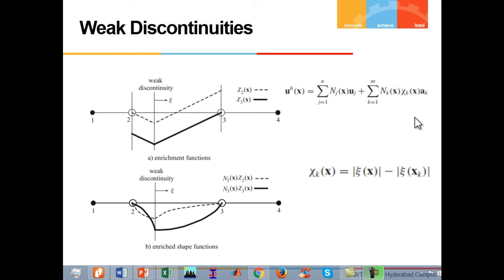Weak discontinuity enrichment. The XFEM approximation can be used for weak discontinuity problems by replacing the Heaviside function with an appropriate enrichment function ξ(x), where ξ(x) is the weak discontinuous enrichment function defined in terms of the signed distance function ζ(x). The same one-dimensional problem discussed earlier is considered, with the only difference being the assumption of a weak discontinuity at an arbitrary location within the middle element. Figure A illustrates the signed distance function for the simple problem. This figure depicts how the original shape functions are transformed by the enrichment, introducing a kink in the displacement field. As a result, a jump in its derivative — i.e., a discontinuity in the gradient of the function — is anticipated.